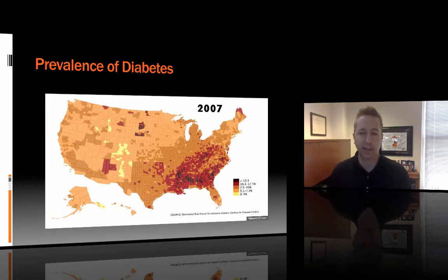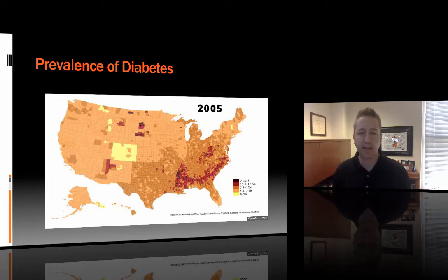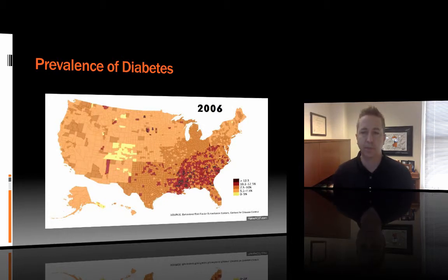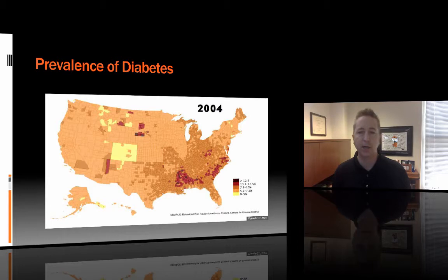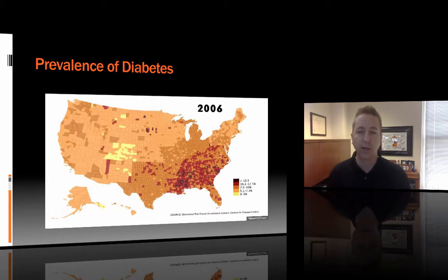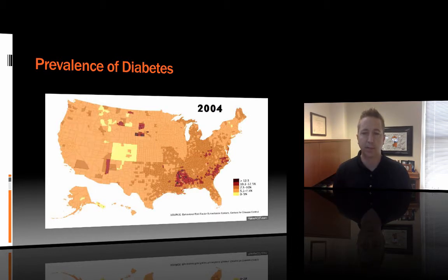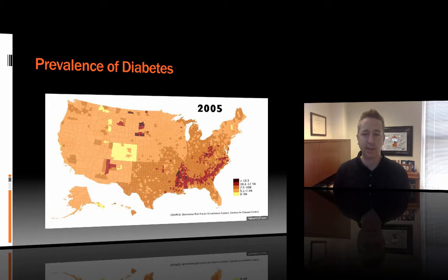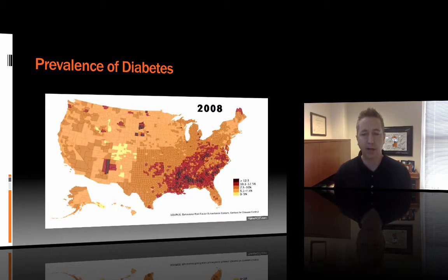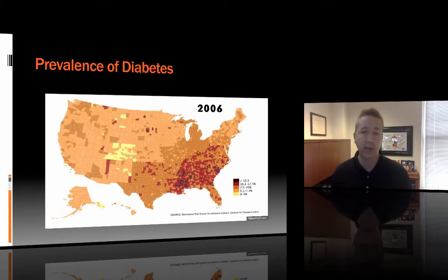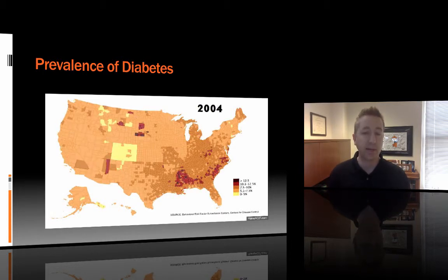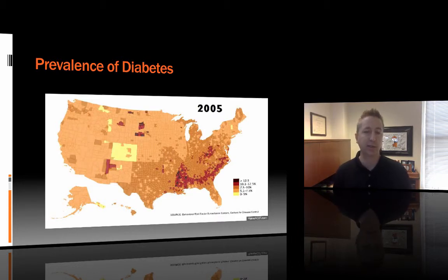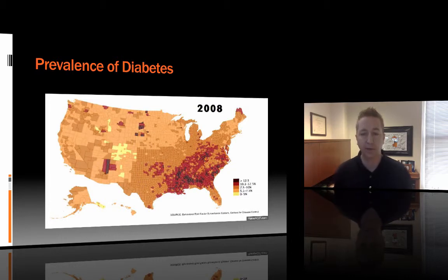This animated GIF shows the way diabetes spreads throughout the U.S. from 2004 through 2009. Look at how diabetes is just exploding, particularly in the American Southeast, including Oklahoma, where diabetes prevalence is increasing. You hear people talk about why we have an epidemic of diabetes — this is why. We're seeing it growing at faster and faster rates, and if we don't get a handle on this, it's going to overwhelm our healthcare system.